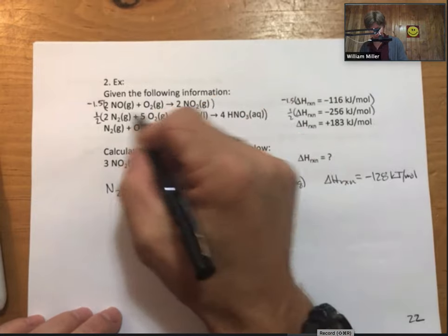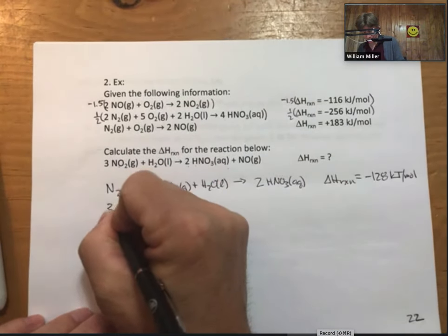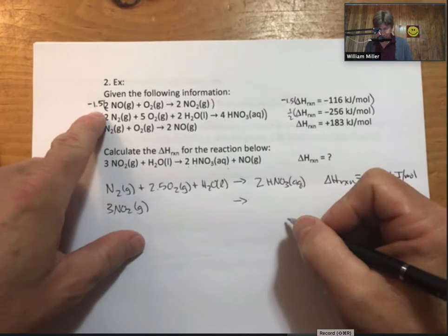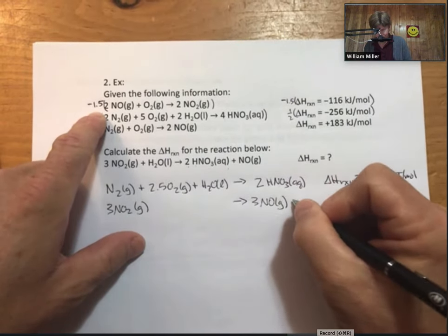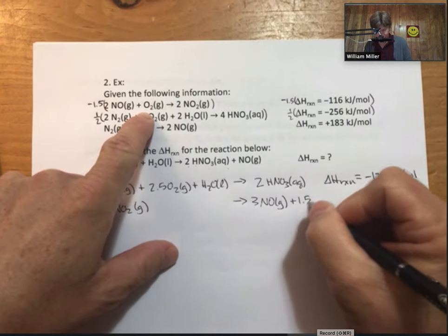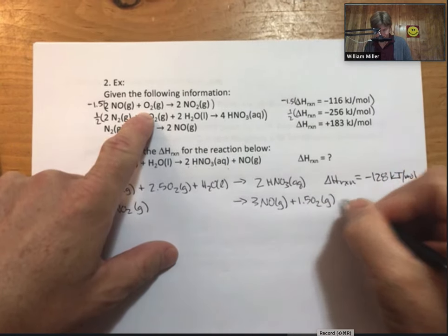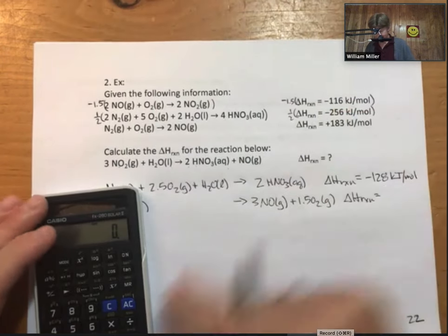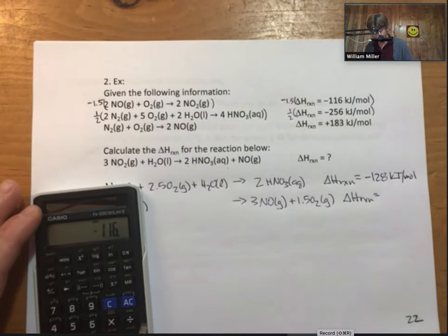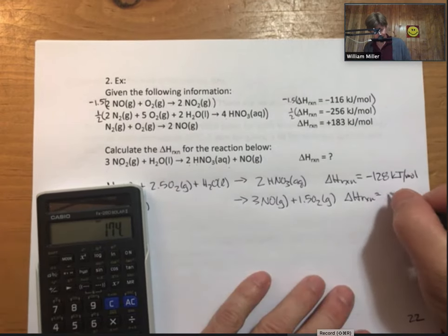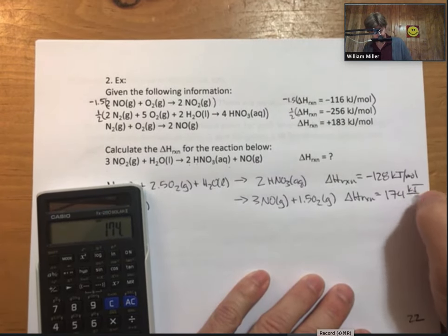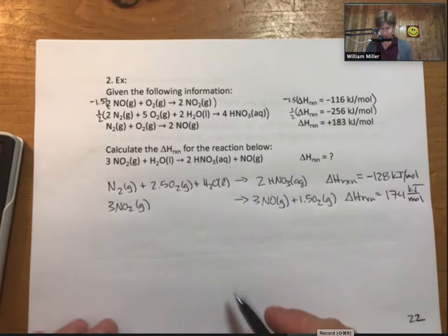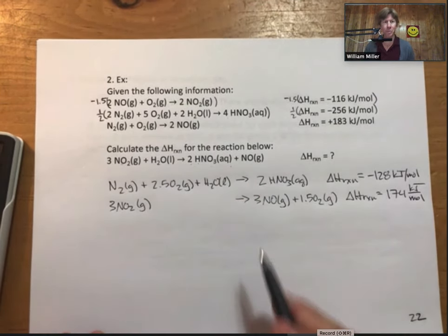All right. Let's see if I can keep track of things. So this is going to be 3 NO2. Then I'm going to make 3 NO plus 1.5 O2. Delta H reaction for this process, minus 116 times 1.5 is minus 174 kilojoules per mole.